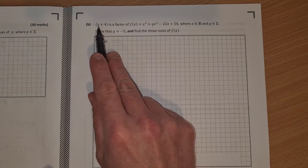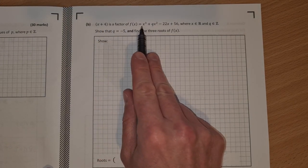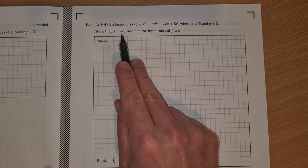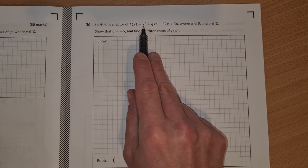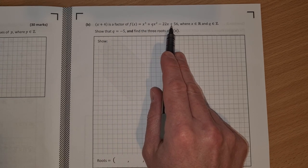Show that q is equal to minus 5 and find the three roots. So the way I do this is I'm just going to do long division of x plus 4 into this when I sub in q is equal to minus 5. And that will show that q is equal to minus 5 because the long division will work out properly, work out as a zero remainder.